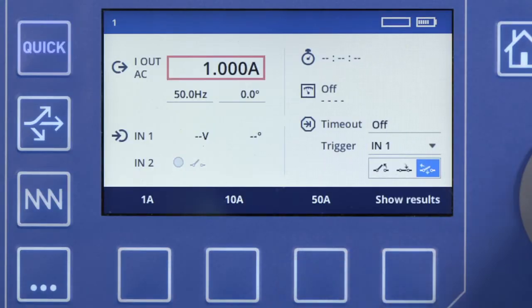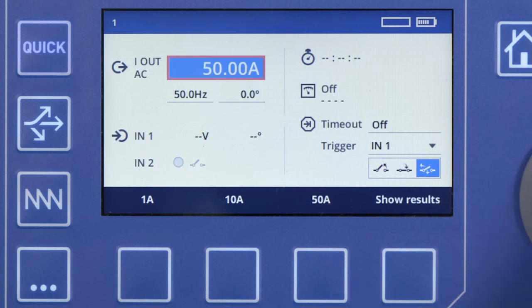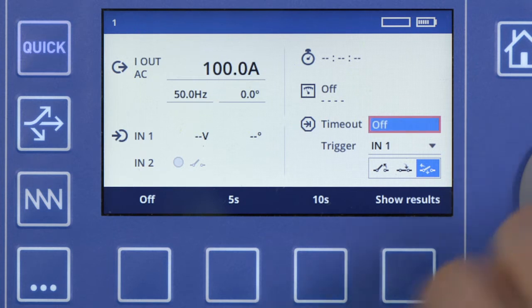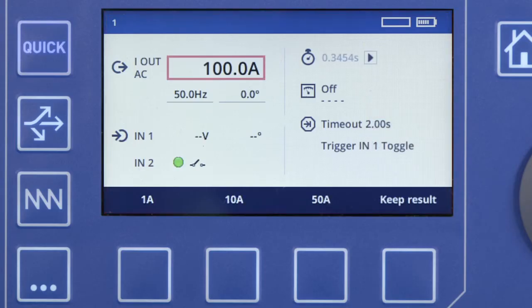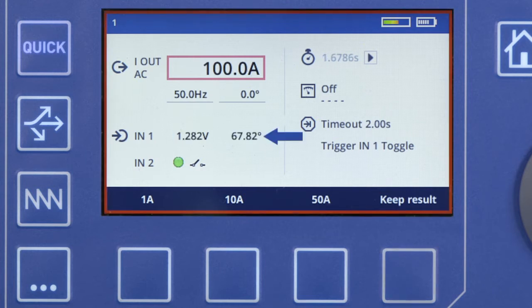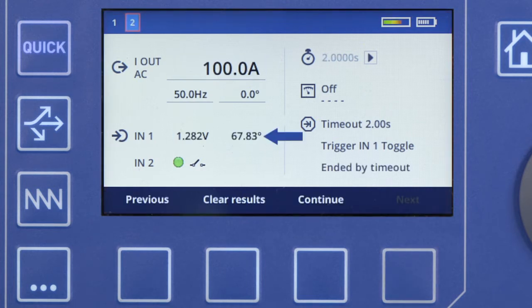Now we are ready to test the polarity. Please set a timeout of 2 seconds and then inject 100A into the CT. The phase angle displayed at IN1 is what we need to focus on now. It should be between 0 degrees and 90 degrees. The CT's polarity is correct.